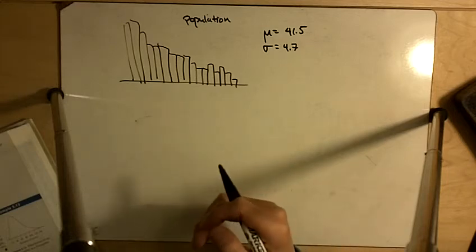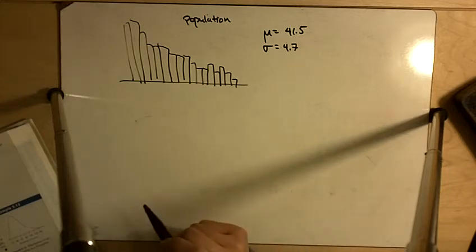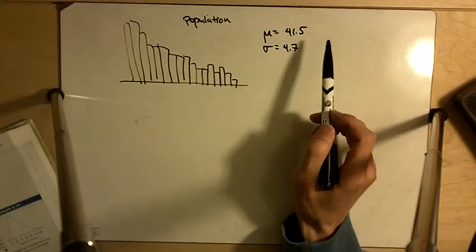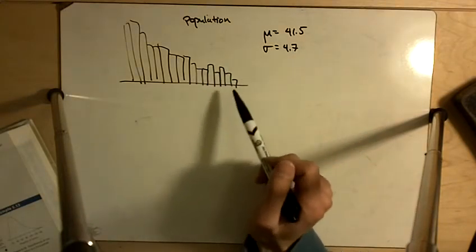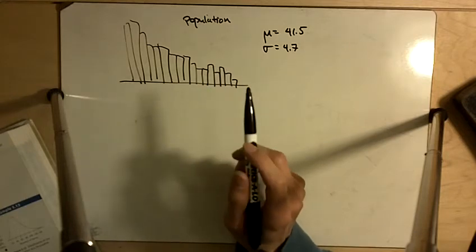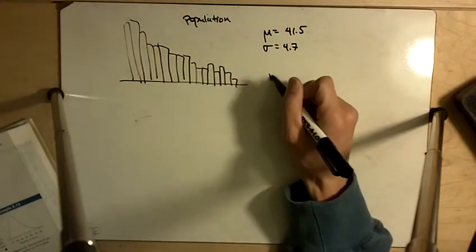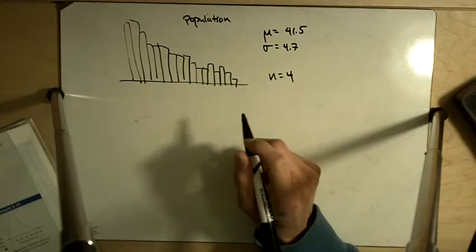Problem 5.24 says the mean of this distribution shown in the histogram is 41.5 and the standard deviation is 4.7. So this is going to serve as our population. It says consider taking random samples of size n equal to 4 from this distribution.